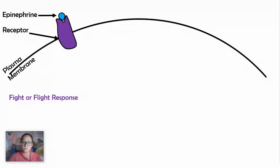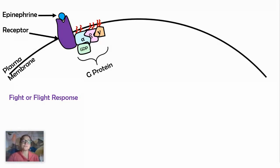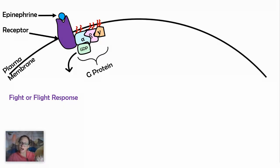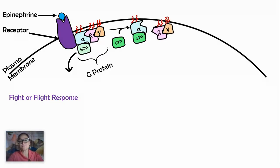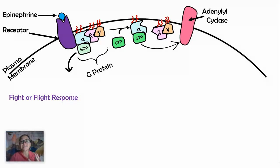Epinephrine attaches to a transmembrane protein receptor because it is a protein-based hormone. When that receptor receives the ligand — the epinephrine — it goes through a conformational change in shape, which will activate a G protein. When we say activated G protein, what that means is the GDP comes off and dissociates, and instead a GTP replaces that GDP. So now we have an active alpha subunit of the G protein, which will then go and activate adenylyl cyclase — a transmembrane protein that acts as an enzyme.